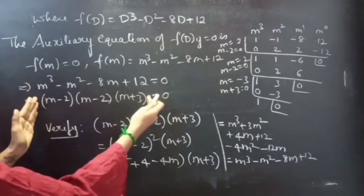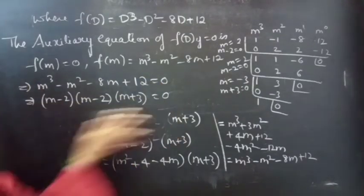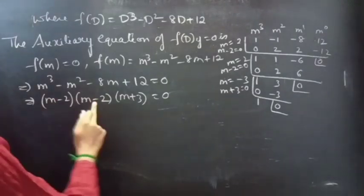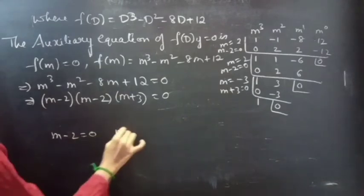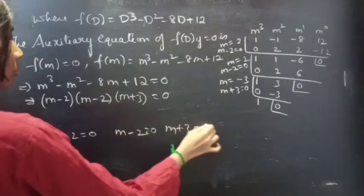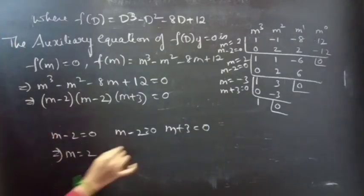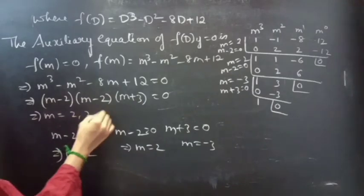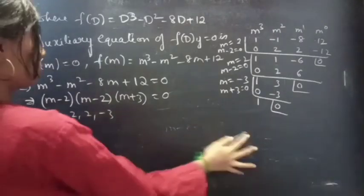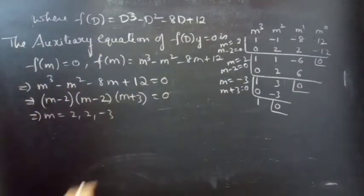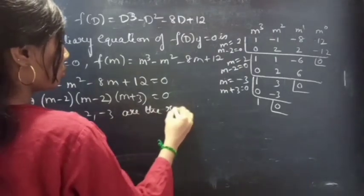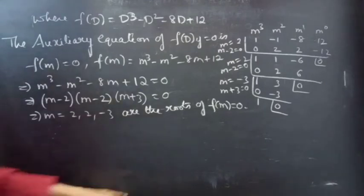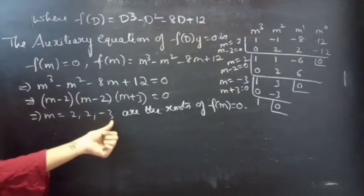So we can write this polynomial as the product of 3 factors. By equating each factor to 0 we get the roots: from m minus 2 equals 0 we get m equals 2, again m equals 2, and from m plus 3 equals 0 we get m equals minus 3. So m equals 2, 2, minus 3 are the roots of the auxiliary equation f(m) equals 0.